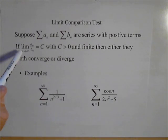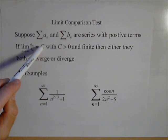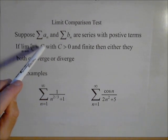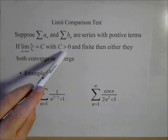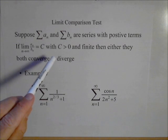then if we take the limit as n goes to infinity of the ratio of their sequences, and it equals C, some finite non-zero constant, then they either both converge or they both diverge.